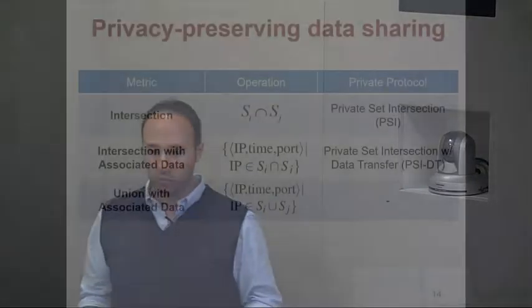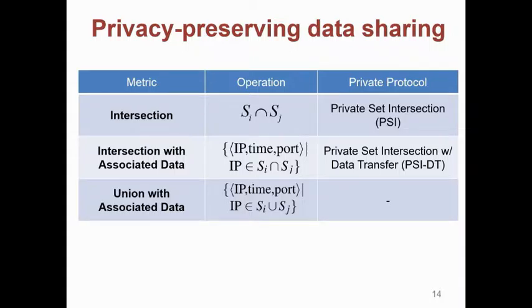We can also support privacy-preserving data sharing. If I only want to share the intersection of these datasets, I can do that — there is a protocol for that using garbled circuits. If I also want to share metadata — not only the IPs in common but also at what times they appear in my logs and what ports they attack — I can do that in a privacy-preserving way. We experiment to see what's the difference in prediction accuracy between sharing everything and just sharing the intersection.